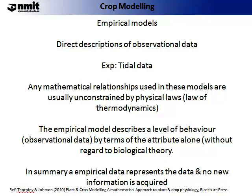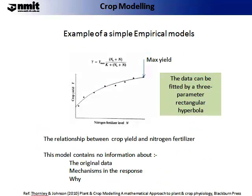An example of an empirical model is the saying 'red sky at night, shepherd's delight,' which has been used in the planning of many farming activities. Here is another example of a simple empirical model describing the observational data of crop yield relative to the level of fertiliser. This model contains no information about the original data, the mechanism in the response, or why the plant is behaving in the observed manner.